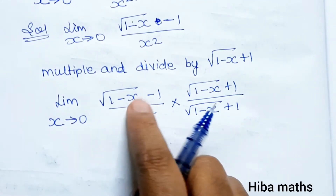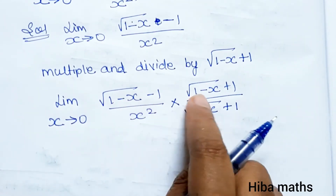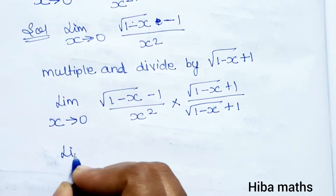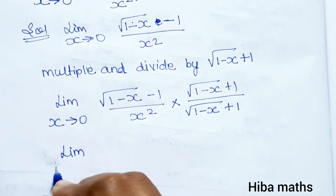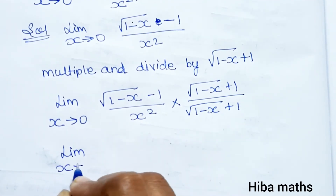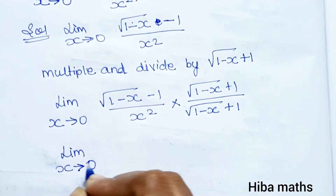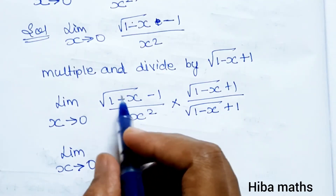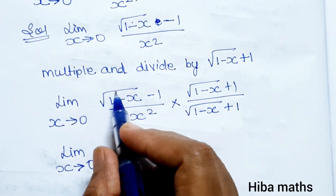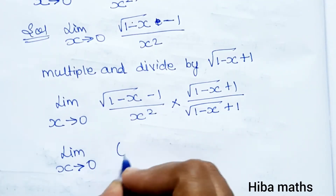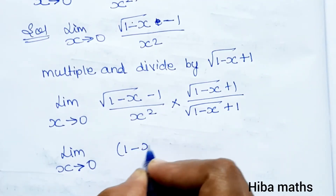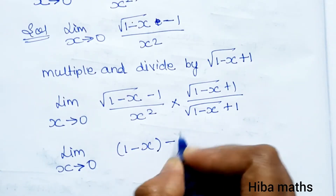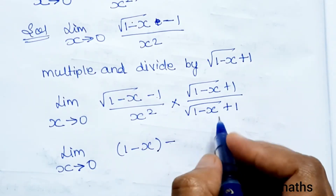Now in the numerator, it is in the (a minus b)(a plus b) format, which equals a squared minus b squared. So limit as x tends to 0: we apply that identity to get 1 minus x minus 1 in the numerator.